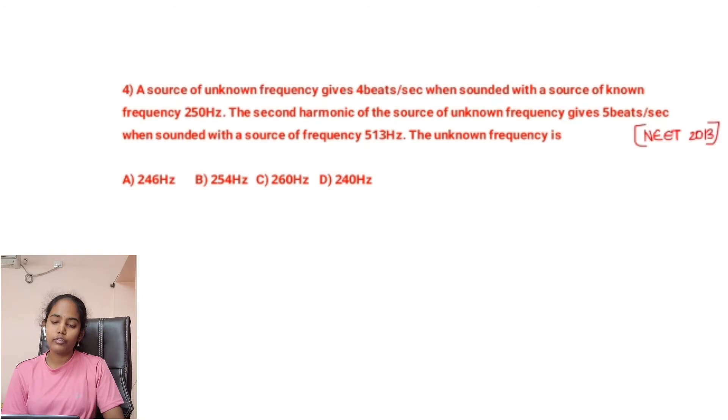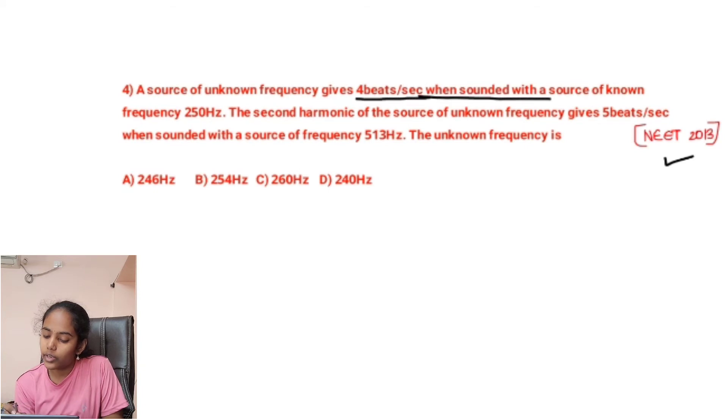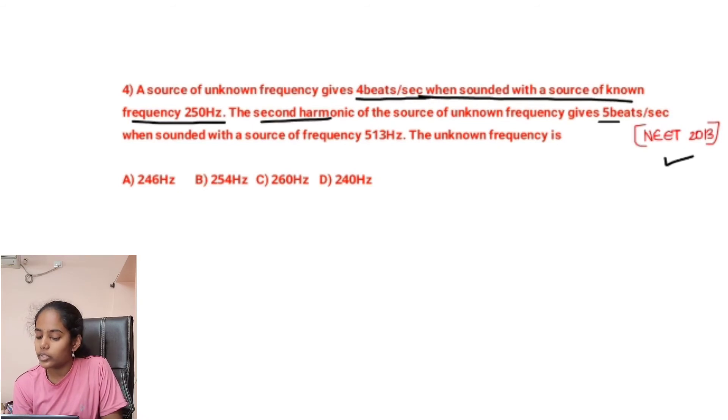Now we will go to the fourth question. This is the previous year question. A source of unknown frequency gives 4 beats per second when sounded with a source of unknown frequency 250 hertz. The second harmonic of the source of unknown frequency gives 5 beats per second when sounded with a source of frequency 513 hertz. The unknown frequency is.